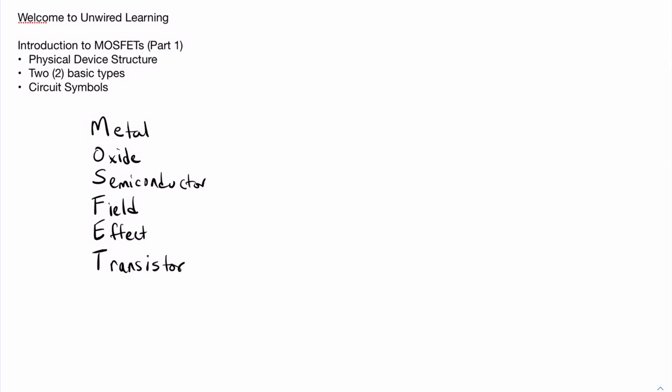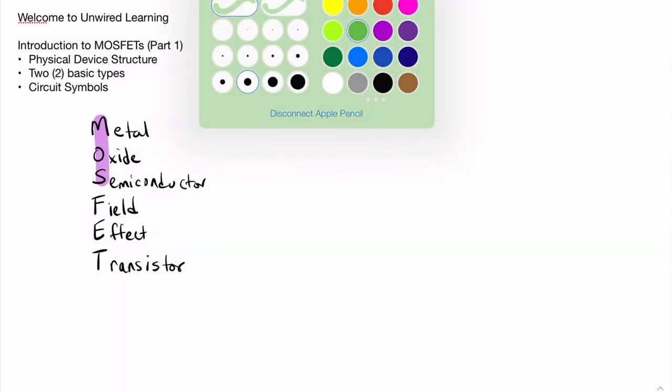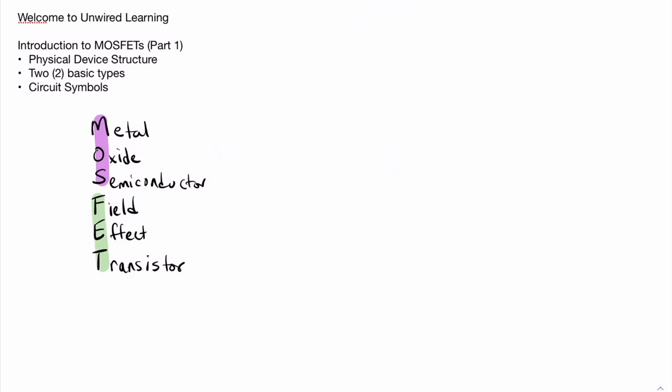The first three letters in the acronym, MOS, give us some clues about the physical structure of the device, whereas the next three letters, FET, give us a pretty good indication about the physical operation of the device. To understand the operation, we should dive first into the physical structure.